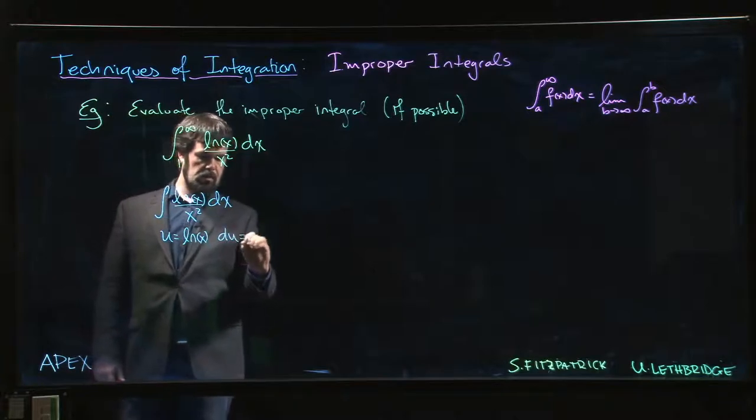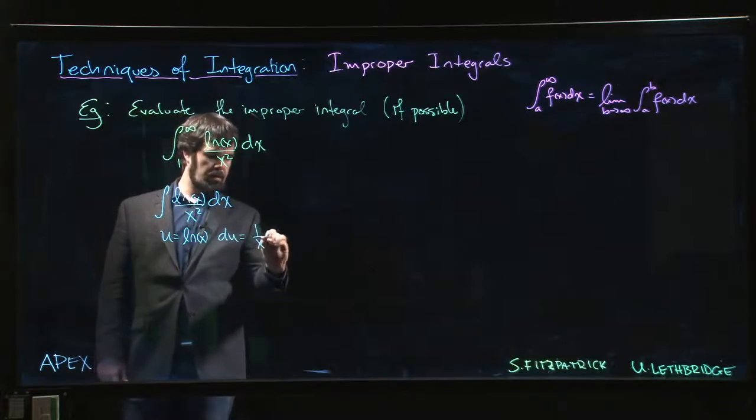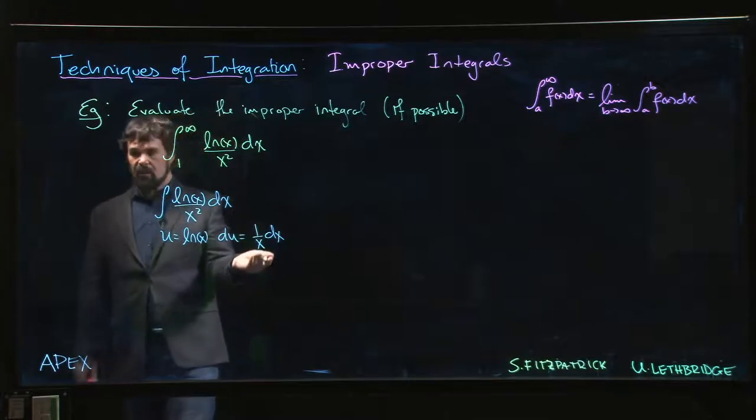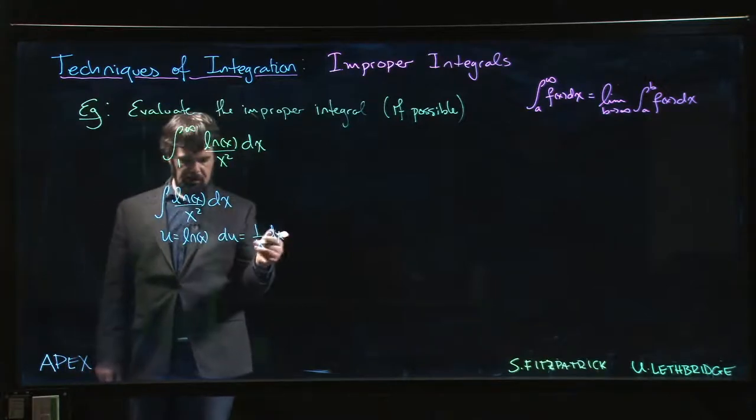So then du is 1 over x dx. So that gets rid of the logarithm, which is one of the reasons why we kind of like to do it this way.